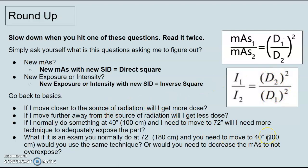Go back to your basics. If I've moved closer to the source, will I get more dose? Yes. If I move farther away from the source, will I get less dose? Yes. That's your basic cardinal rules, right? If I normally do something at 40 inches and I have to move to 72, do I need more mAs? Absolutely. If it's an exam you normally do at 72, but now you move to 40, are you going to use the same technique? Gosh, I hope not. You're going to want to decrease your mAs and not overexpose. I hope that makes sense.